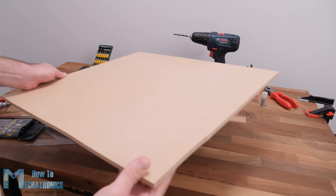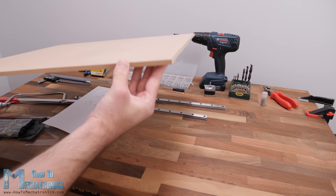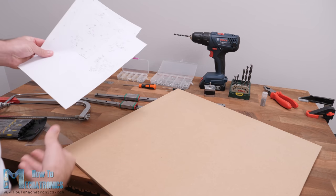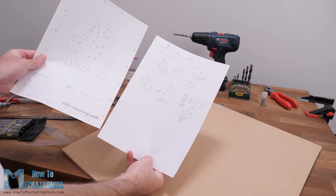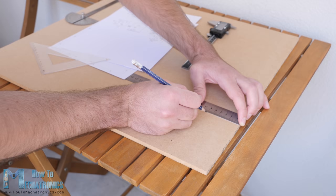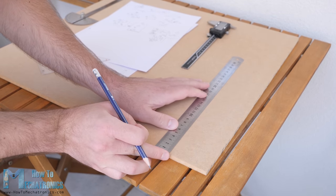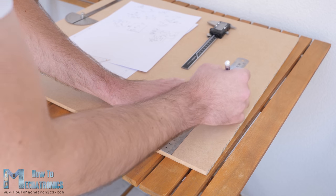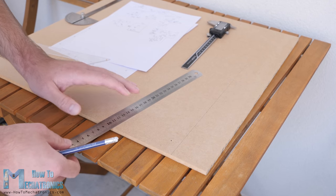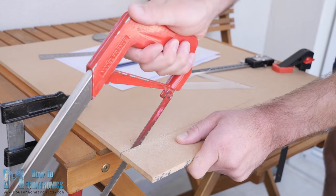OK, so now we can start building the machine. Here's the 8mm MDF board that I will use, and according to the drawings that I took from the 3D model, now I will cut the pieces to size. For that purpose, I used the simplest possible method, a pencil for marking where I needed to cut, and a hand saw for cutting them.